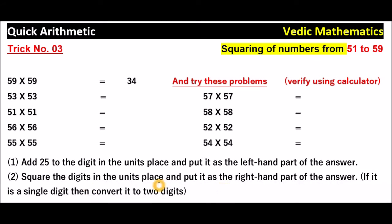So in the units place 9 is there. Square it. So 9 square, 9 into 9 is 81. And put 81 as the right-hand part of the answer. So left side, right side, here you have to write this side: 81.